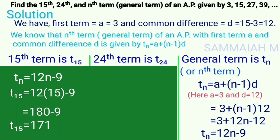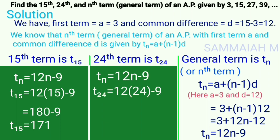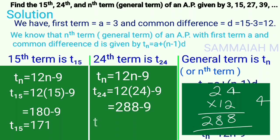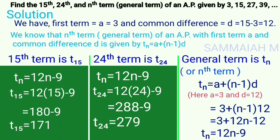Now the 24th term using the nth term formula: tn = 12n − 9 with n = 24 gives t24 = 12 × 24 − 9 = 288 − 9 = 279.